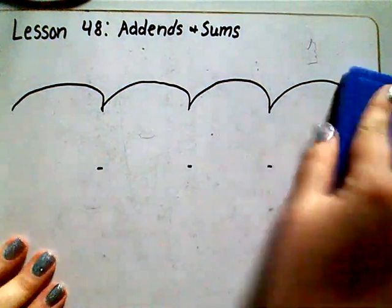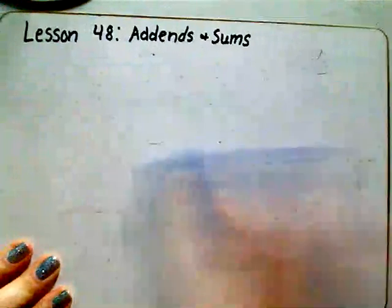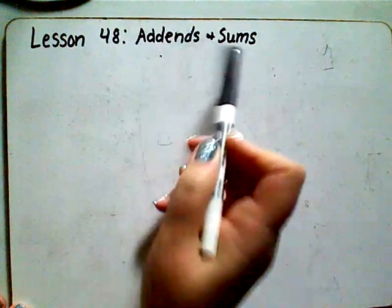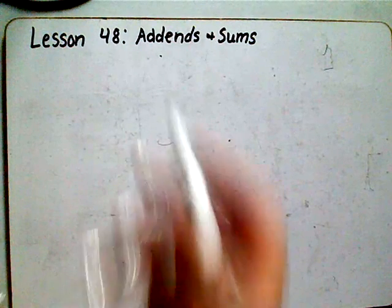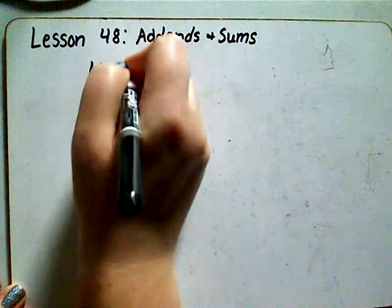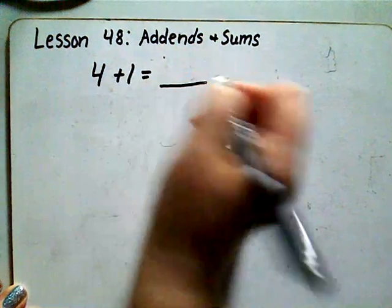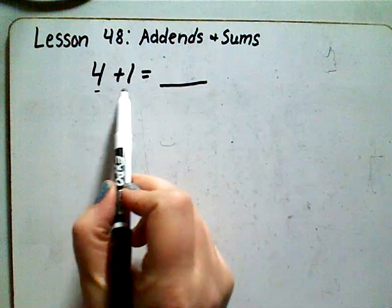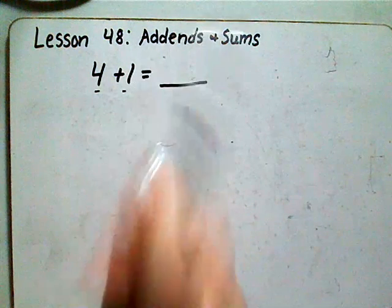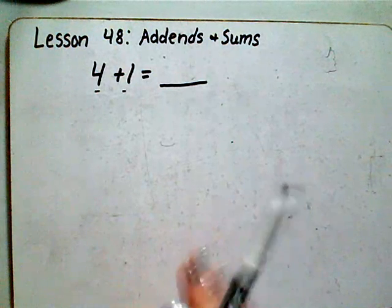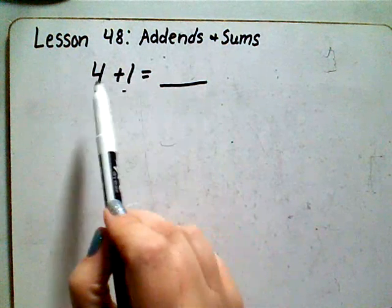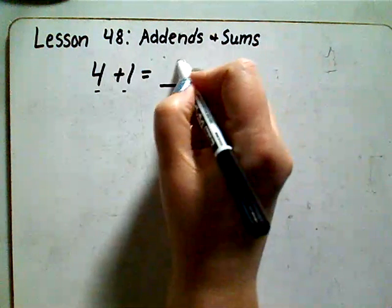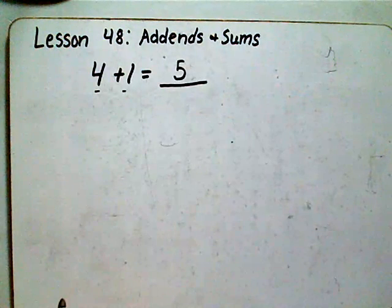Today we're going to take a look at add-ins and sums. Our add-ins are the numbers that we add together, and our sum is the answer we get when we add. If I have four plus one, the four and the one are our add-ins — those are the two numbers we are adding together. The sum would be five, so five is our sum.